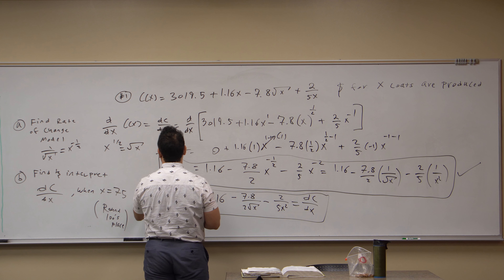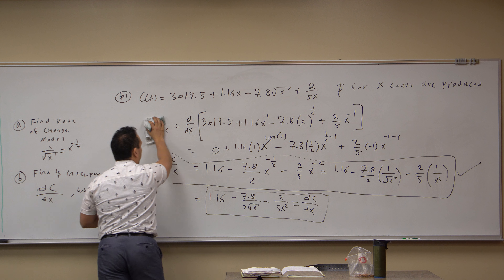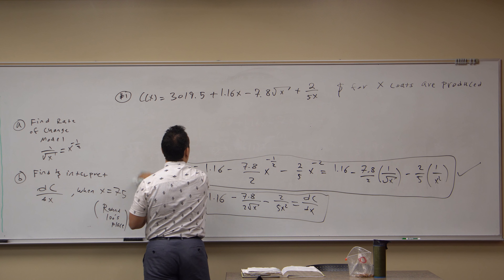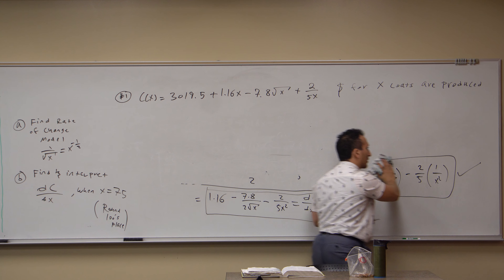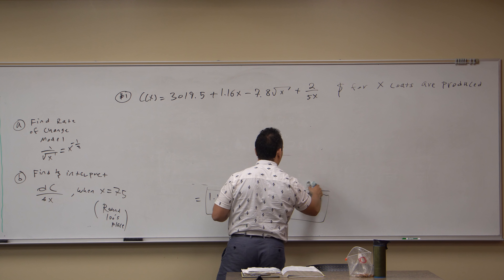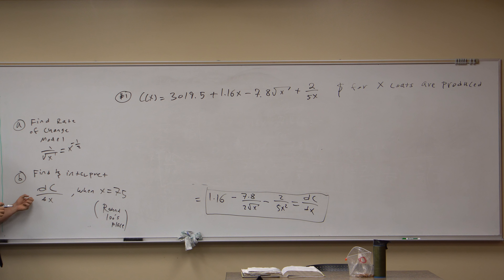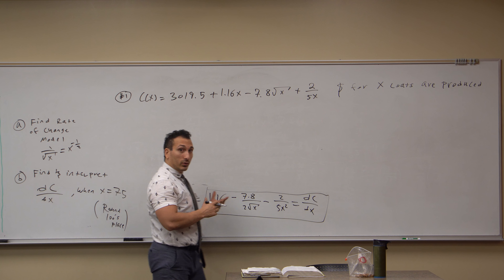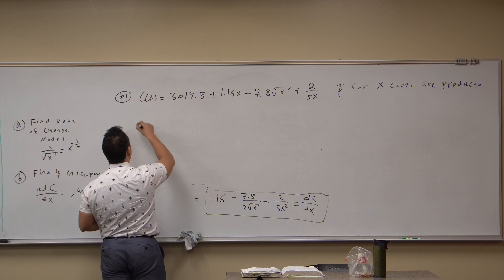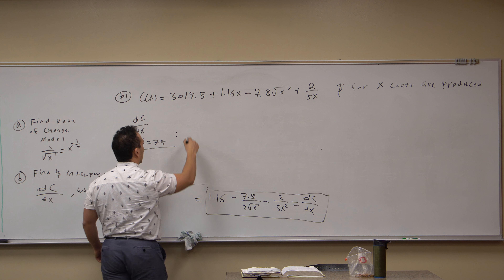Now I'm going to erase the work and keep just that final expression, because we're moving on to Part B: find and interpret DC/DX when X equals 75. All that means is replace X with 75 in the derivative equation. So DC/DX is equal to all that stuff, and you just replace every X you see with 75.